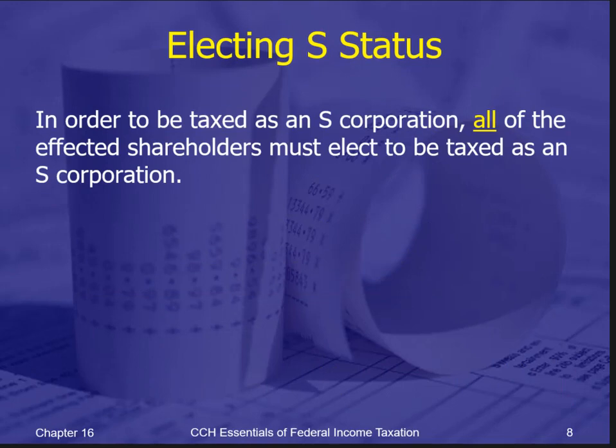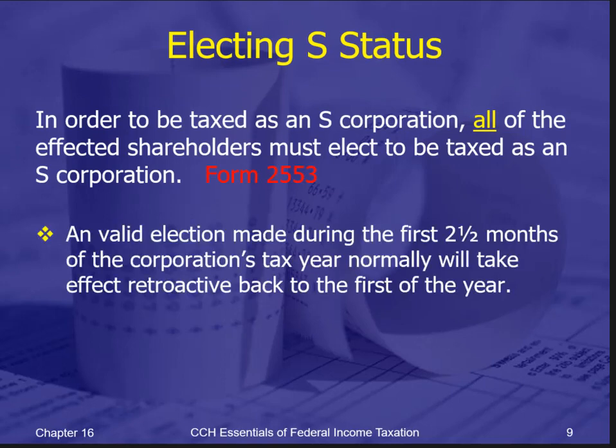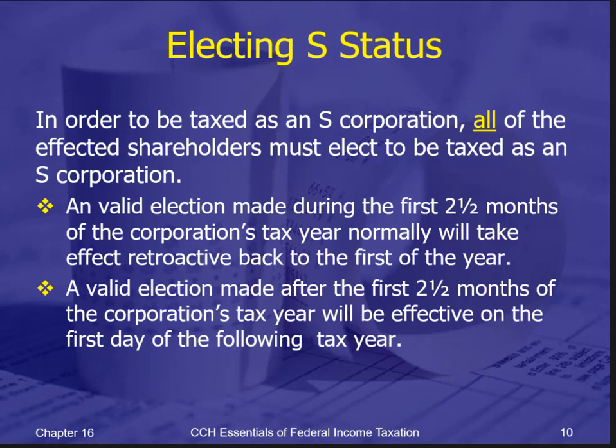In order to be taxed as an S-Corporation, you have to elect — nothing is automatic. You have to send in Form 2553, and all of the shareholders must sign it. You elect when it's going to be effective. If you do it in the first two and a half months of the year — for a calendar year, by March 15th — it will be retroactive to the beginning of the year. If you do it after that, it will take place the following year. The IRS has allowed some leeway if you were late for a good reason.